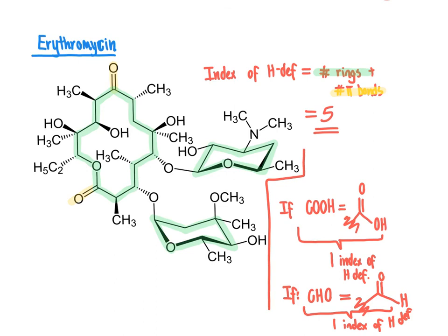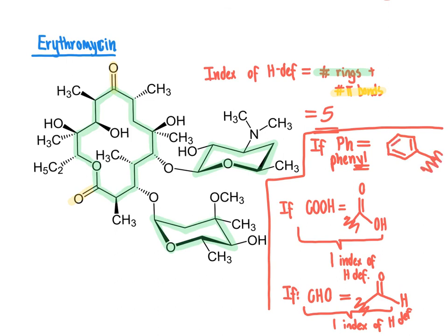One other abbreviation to be aware of: if you see Ph within a molecular structure, that generally refers to the phenyl ring — P-H-E-N-Y-L — meaning an aromatic compound branching off to something. The phenyl group contributes quite a few indexes of hydrogen deficiency: it has one ring and, incorporated in it, three pi bonds, giving a total index of hydrogen deficiency of four for any aromatic ring like this within the molecule.